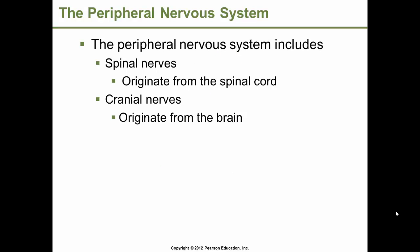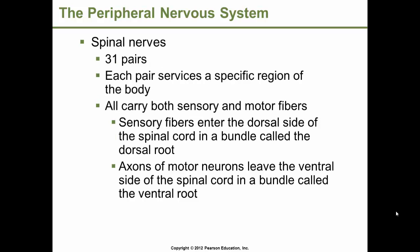The peripheral nervous system includes spinal nerves and cranial nerves. Spinal nerves originate from the spinal cord, and cranial nerves originate from the brain. There are 31 pairs of spinal nerves, each serving a specific region of the body, and all 31 pairs carry both sensory and motor fibers. Sensory fibers enter the dorsal — posterior — side of the spinal cord in a bundle called the dorsal root, while axons of motor neurons leave the ventral — front — side in a bundle called the ventral root.